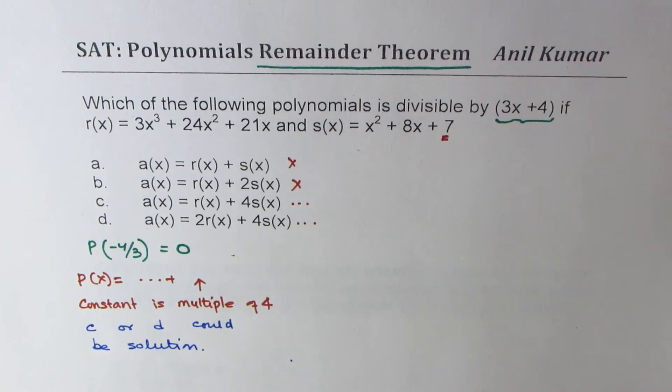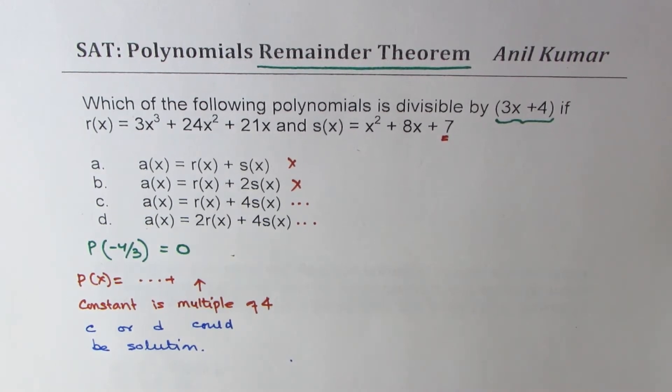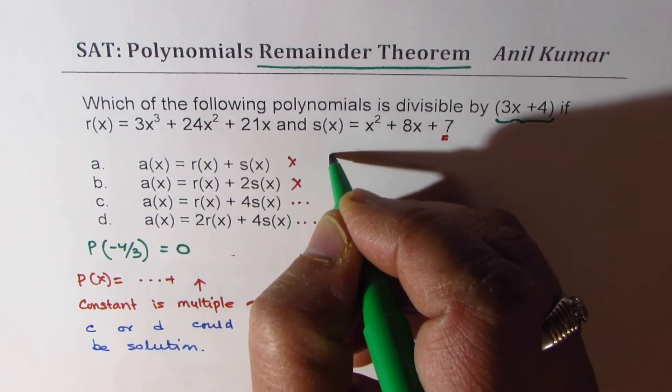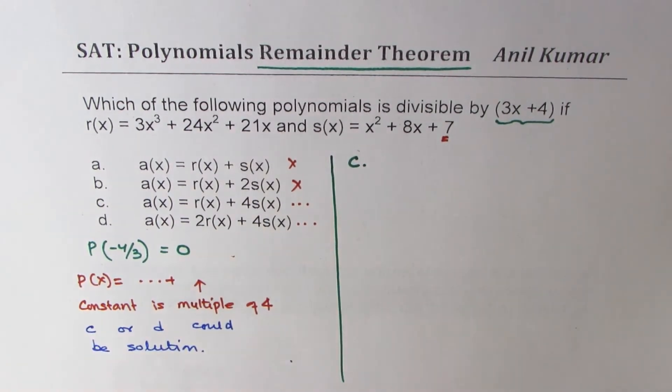Do you see that part? So we have eliminated two choices and we are remaining with only two of them to try it out. So let's try it in sequence. Let's try c.